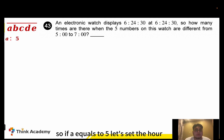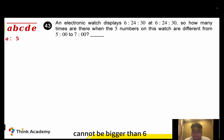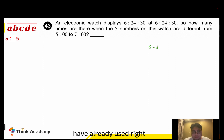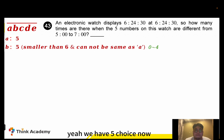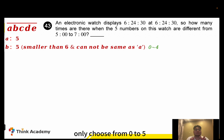If A equals five, meaning it's five o'clock, how many choices do we have for B? B represents the tens digit of the minute, which can only be zero to five — but it cannot be five since we've already used it. And it cannot be bigger than six, so B can only be zero to four, giving us five choices.